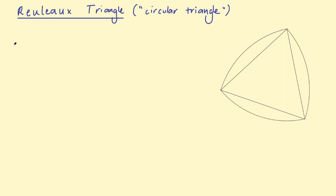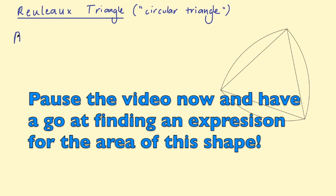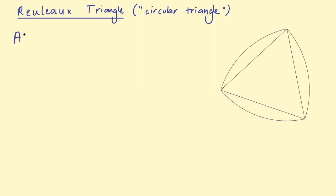I want to focus on looking at the area. In GCSE Mathematics you need to be able to find the sector of a circle and the segment of a circle, and we have both of those things in this shape. We have a sector here. If we call the side length of the equilateral triangle A, that's the radius of the circle centered on that corner. To find the total area of this Reuleaux triangle I'm going to firstly find the area of the sector, then the area of the segment, and then add on the area of the equilateral triangle.